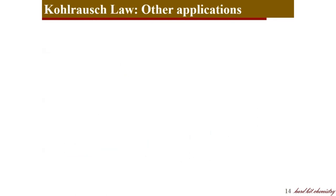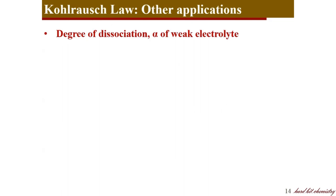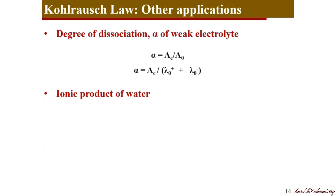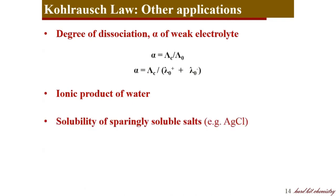Kohlrausch's law also helps to calculate the degree of dissociation α, because α is the conductance ratio — conductance at a given concentration to conductance at zero concentration. And it helps to find out the ionic product of water and the solubility product of sparingly soluble salts like silver chloride or lead sulfate. That is about Kohlrausch's law, Oswald's dilution theory, and how Kohlrausch's law helps calculate λ₀ for weak electrolytes.